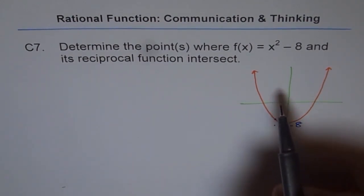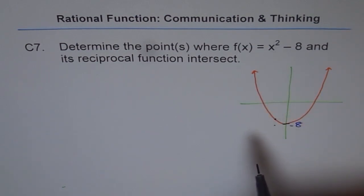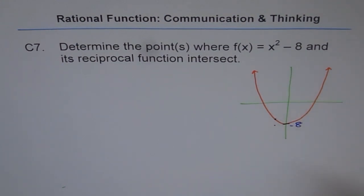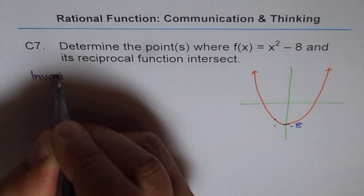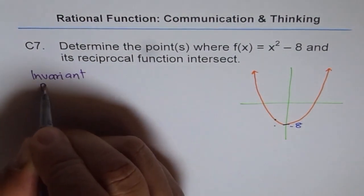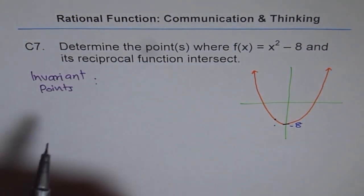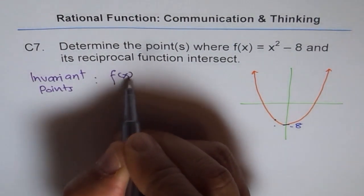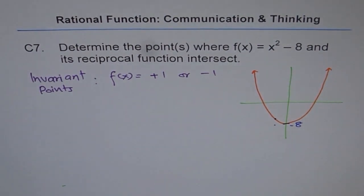Somewhere on this function, the value of this function will be plus 1 and the value will be minus 1. Those are the points where the reciprocal and our function will intersect, because reciprocal of 1 is 1 and reciprocal of minus 1 is also minus 1. So the invariant points are the points where they will actually intersect.